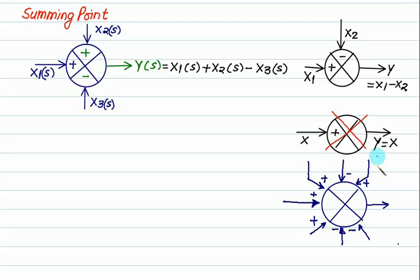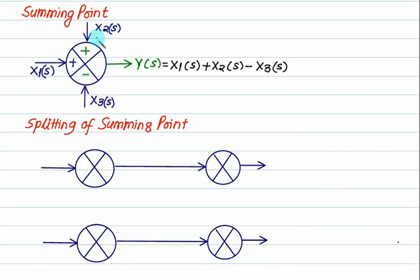So what is true about the summing point? The summing point is only meaningful when it has more than one input — either two, three, or any number. The summing point just does the addition or subtraction of signals as per their respective signs. With three inputs, the result is x1 plus x2 minus x3.